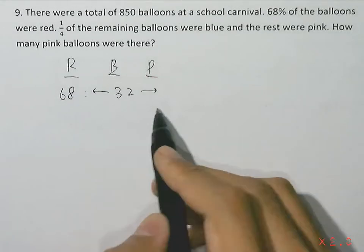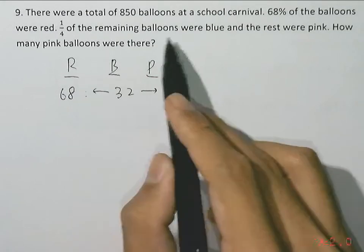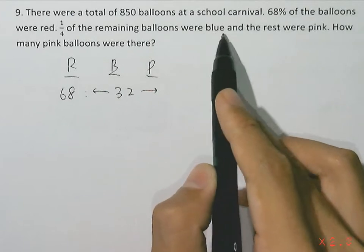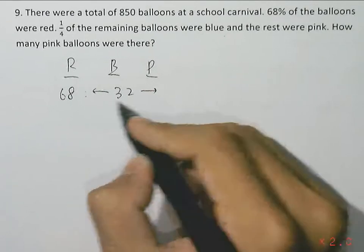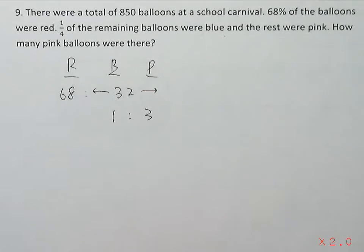One quarter of the remaining balloons, which are the blue and pink balloons, one quarter of the remaining balloons were blue and the rest were pink. So all of the blue and pink, we have one quarter blue and the remaining three quarters pink.